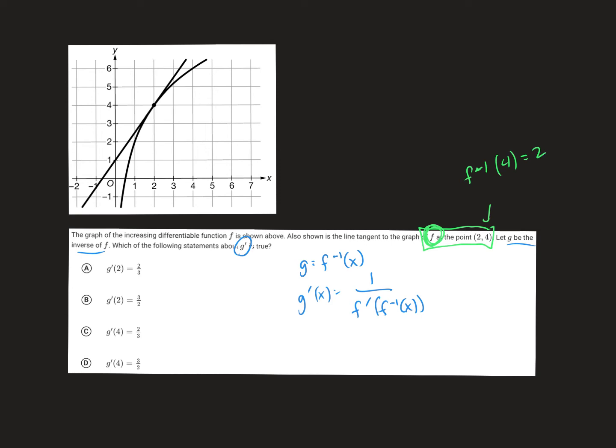So, if I were trying to find the derivative of g, and I have f inverse of 4, that I could find g prime of 4, that would look like that. And then f inverse of 4 is 2, which looks like that.